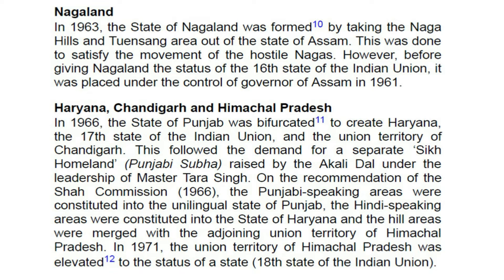Haryana, Chandigarh and Himachal Pradesh: In 1966, the state of Punjab was bifurcated to create Haryana, the 17th state of the Indian Union, and the Union Territory of Chandigarh. This followed the demand for a separate Sikh homeland, Punjabi Subha, raised by the Akali Dal under the leadership of Master Tara Singh. On the recommendation of the Shah Commission, 1966, the Punjabi-speaking areas were constituted into the unilingual state of Punjab, the Hindi-speaking areas into the state of Haryana, and the hill areas were merged with the adjoining Union Territory of Himachal Pradesh. In 1971, the Union Territory of Himachal Pradesh was elevated to the status of a state — the 18th state of the Indian Union.